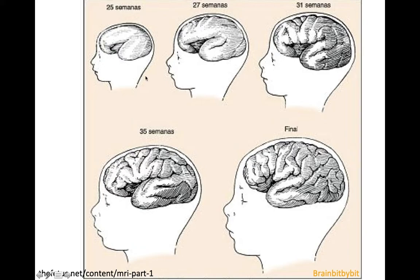When the human brain develops, at about the fifth gestational month, the sulci appear and the first gyri form. The human brain has a lot of gyri to enable a greater cortical surface to fit within the skull. There are many theories about how the folding of the brain takes place, and the different theories are not mutually exclusive.